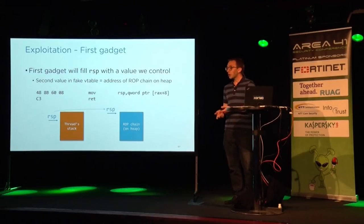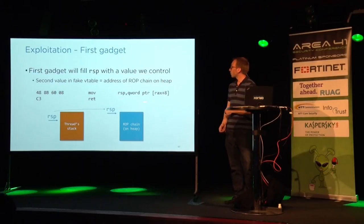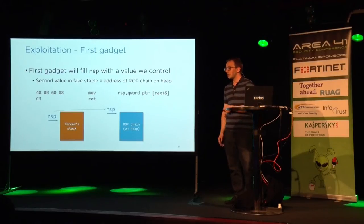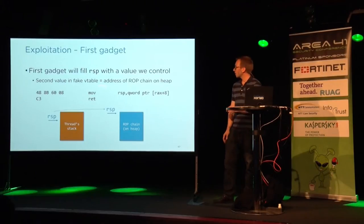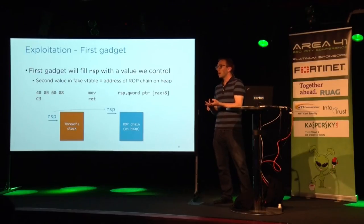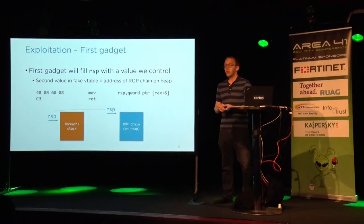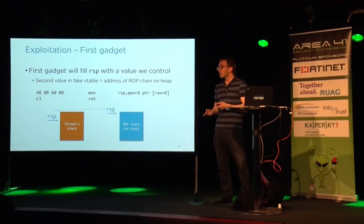Our first target after hijacking is a stack-pivoting gadget — we try to get control over the stack pointer. The first gadget loads the second entry of your V-table and puts it into the stack pointer. So if we put the address of our ROP chain into the second entry of our fake V-table, we can pivot the stack pointer to our ROP chain.